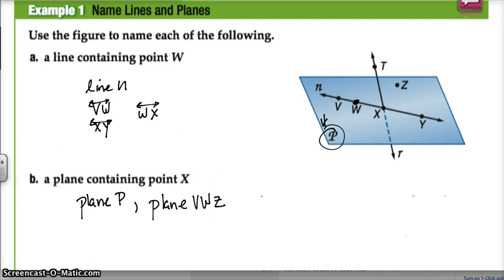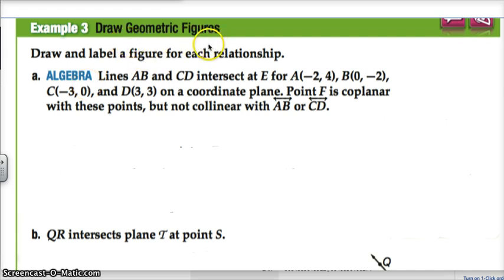Let's look at the next example. So here in example three, we're going to draw geometric figures, draw and label a figure for each relationship. So in lines AB and CD intersect at E for A having this coordinate, B having this coordinate, C having this coordinate, and D having this coordinate on a coordinate plane. We remember what a coordinate plane is. A coordinate plane is described as the X and Y axes and all the points that are represented there. And we know the plane goes on forever and ever and indefinitely in every direction.